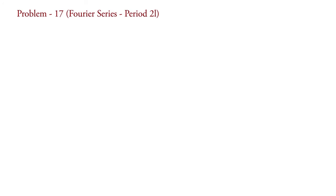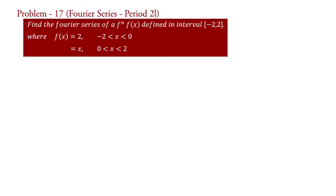Problem on Fourier series with period 2L: Find the Fourier series of a function defined in the interval minus 2 to 2, where f(x) equals 2 for minus 2 less than x less than 0, and f(x) equals x for 0 less than x less than 2.